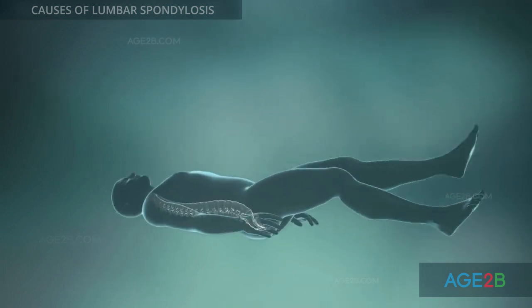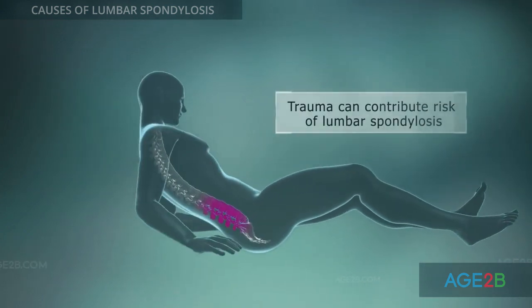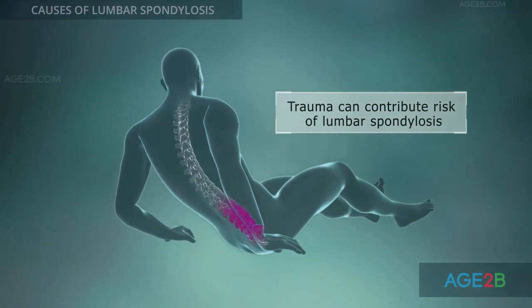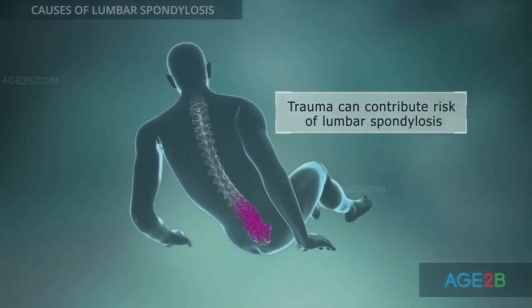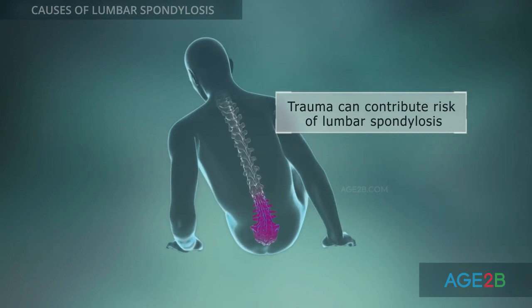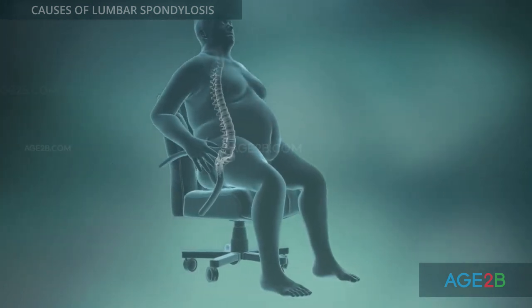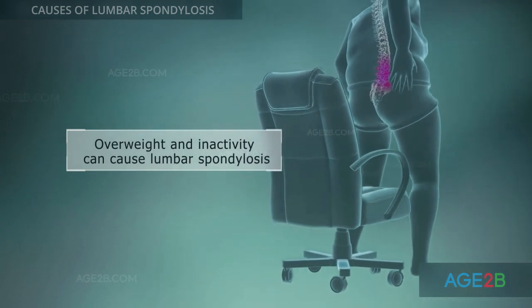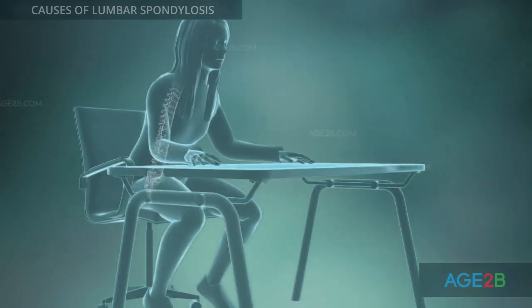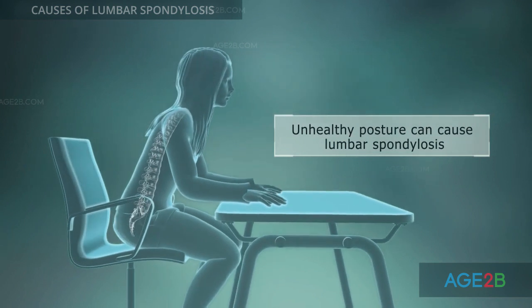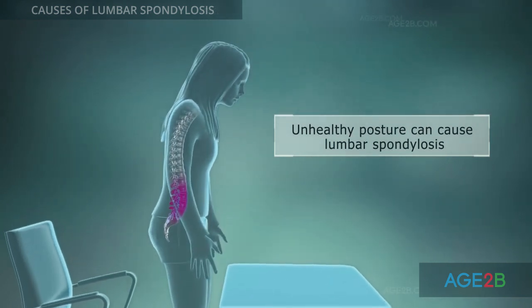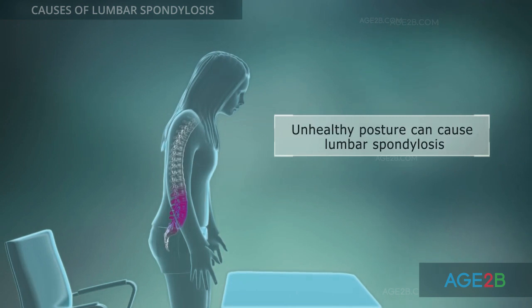Usually, lumbar spondylosis occurs in the elderly, but some factors contribute to its development in young people. One major cause is an injury to the lumbar region of the spine. Overweight and inactivity are also risk factors. Holding your lumbar spine in an uncomfortable position for prolonged periods can also contribute to the development of spondylosis.